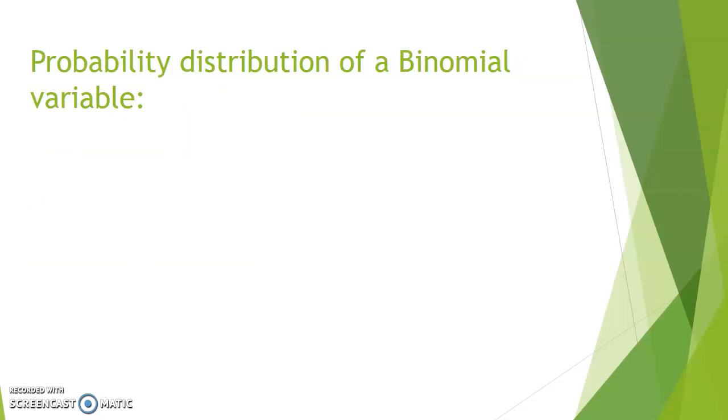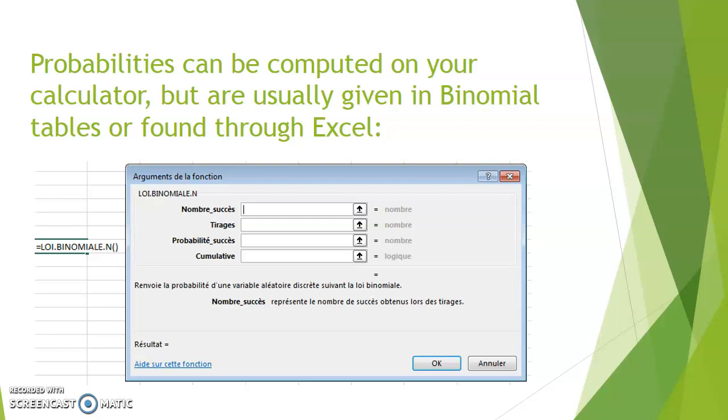However, if we wanted to calculate the probability that a binomial variable takes on a very specific value, then we're back to counting. If X is a binomial law with n trials and p probability of success, then the probability that X will take on a specific number k is equal to n choose k times p to the k times 1 minus p to the n minus k. n choose k is how many different ways the successes can be disposed, p to the k represents k successes with probability p, and n minus k failures with probability 1 minus p.